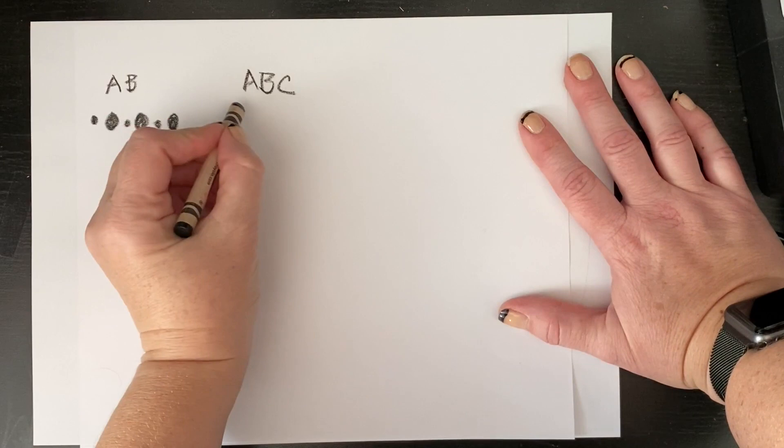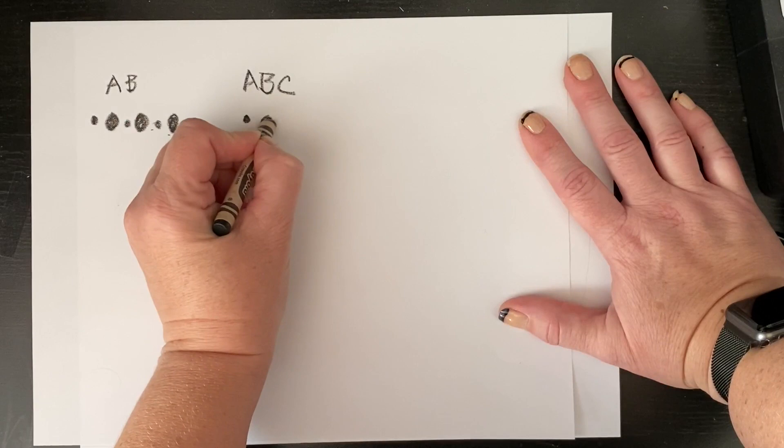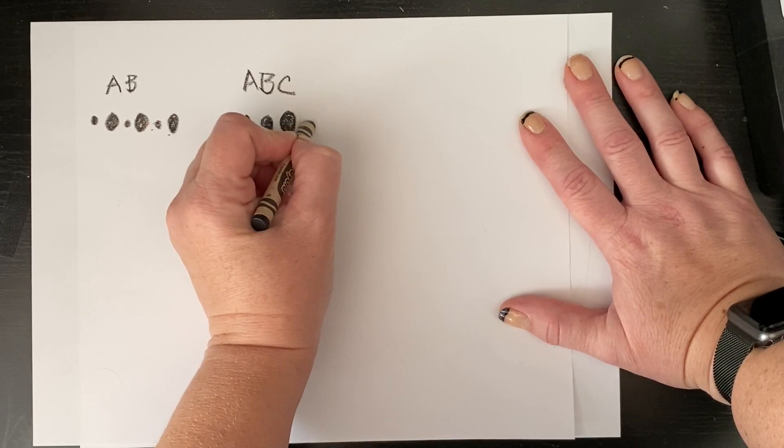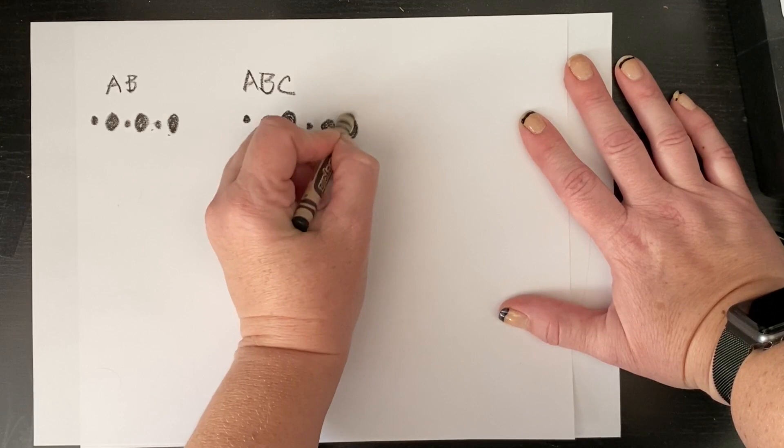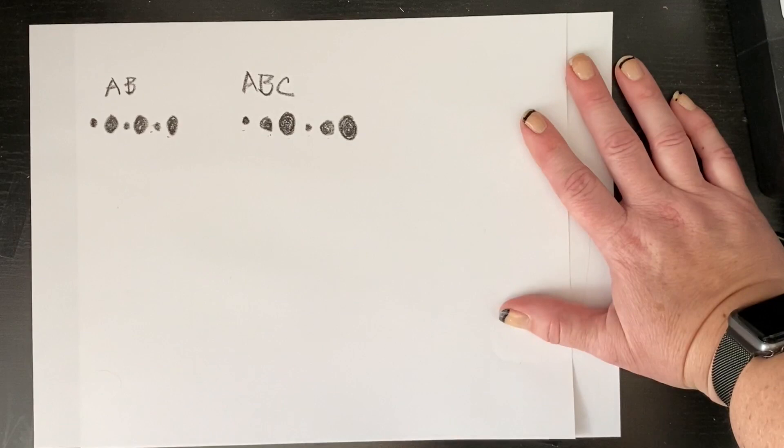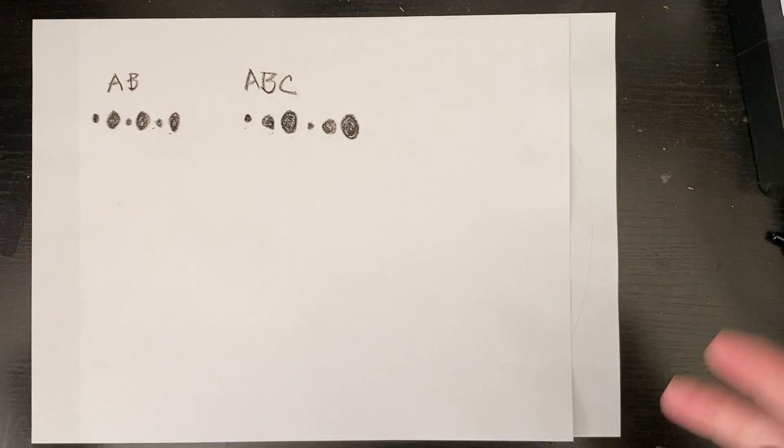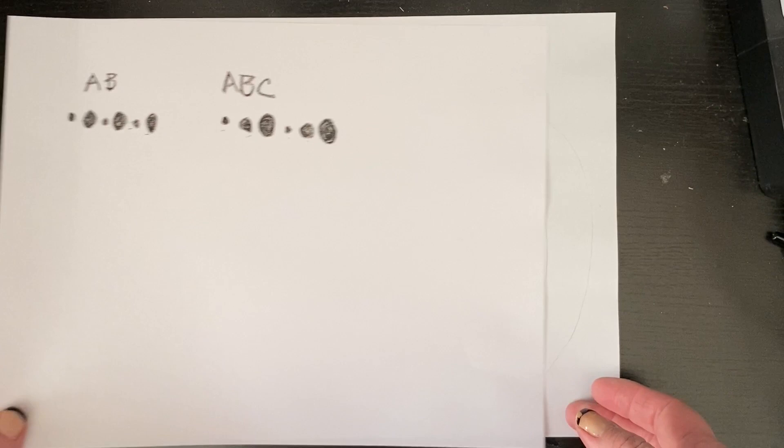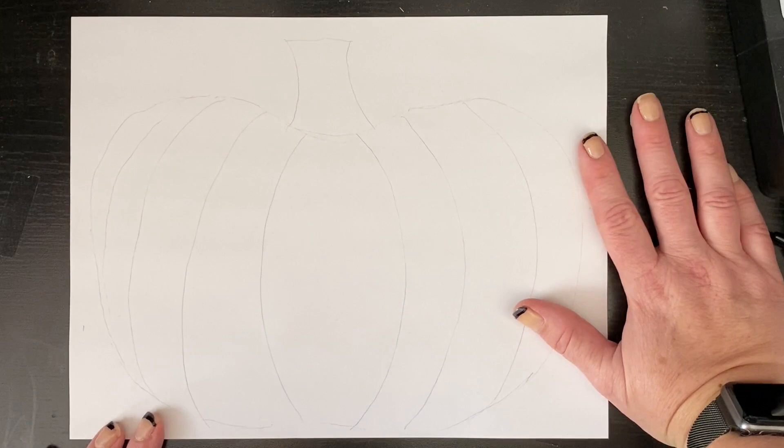The next type of pattern would be an ABC pattern - three different shapes. We're only going to be working with dots, which is why I am only drawing dots. So you have little, medium, and big. That's A, B, C, A, B, C. You want to make your dots as best as you can to make them somewhat symmetrical or circular. They don't have to be perfect, but as close to perfect as you can make them. Artists are not perfect. So what you're going to do now on your pumpkin - this is why we drew very lightly - you are going to choose a line and choose either an AB pattern or an ABC pattern, whatever one you're comfortable with.